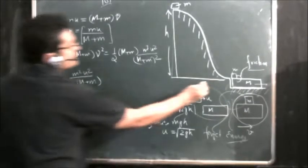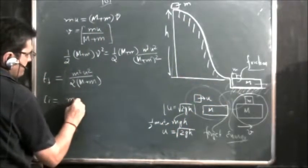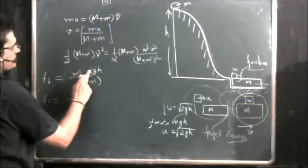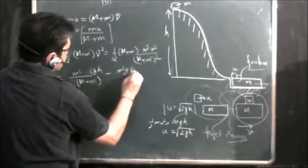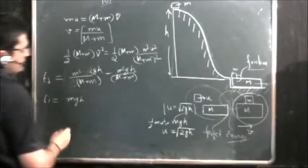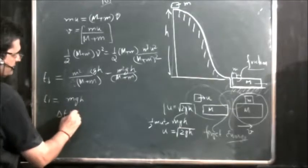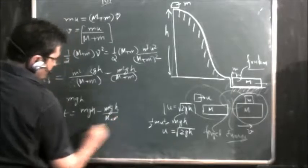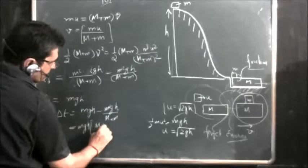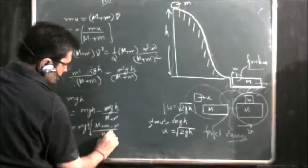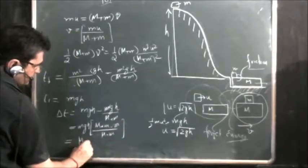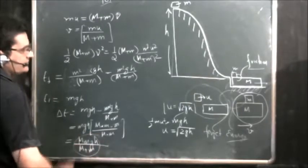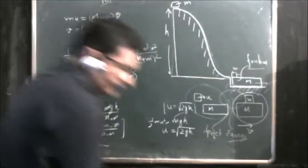The initial energy was the potential energy mgh. Substituting u² = 2gh, the final KE becomes m²Gh / (M + m). The difference in energy is mgh − m²gh/(M + m) = Mmgh/(M + m). This loss in energy is nothing but the work done by the frictional force.